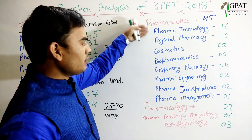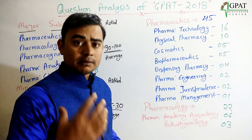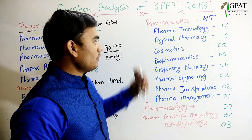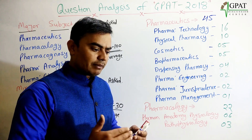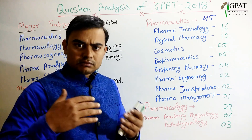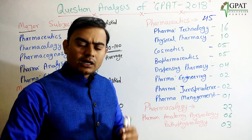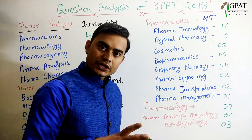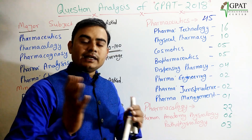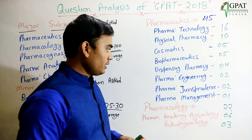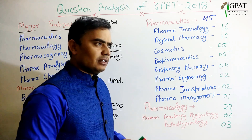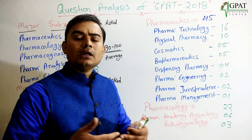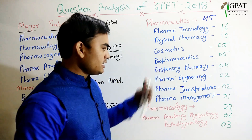From pharmatech, you need to study all dosage forms — their composition, their evaluation, and all parameters. From physical pharmacy, different topics like rheology, interfacial phenomena, and complexometry. Cosmetics: their composition, evaluation, use, and site of application are very important. Dispensing pharmacy covers different calculations — allegation method, dosage calculations, and child dose calculations.